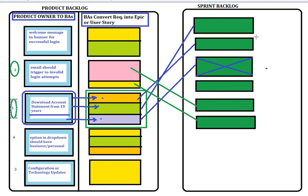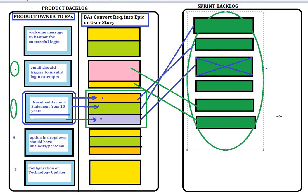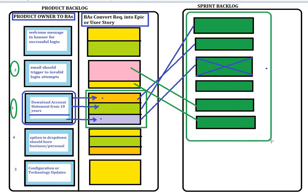To summarize: the product owner brings requirements to the business analyst, who reinterprets them into small deliverable pieces for the scrum team. As soon as the scrum team picks items for a sprint, those items become the sprint backlog — which is the list of user stories actually being worked on. The entire collection of items belongs to the product backlog, but the sprint backlog consists only of the stories you actually picked to work on.